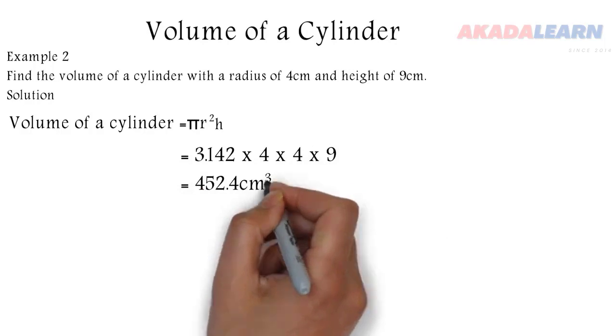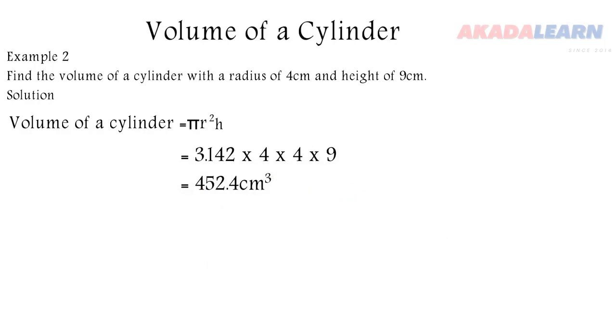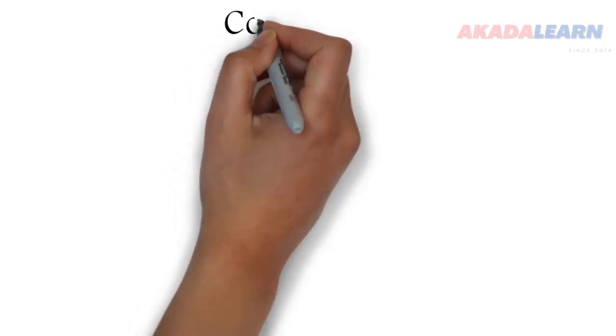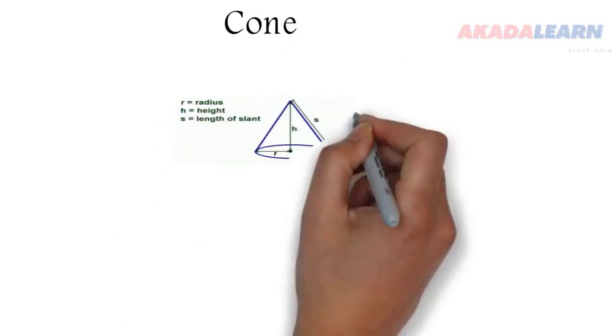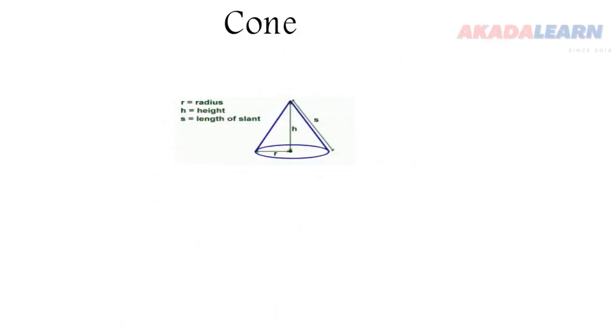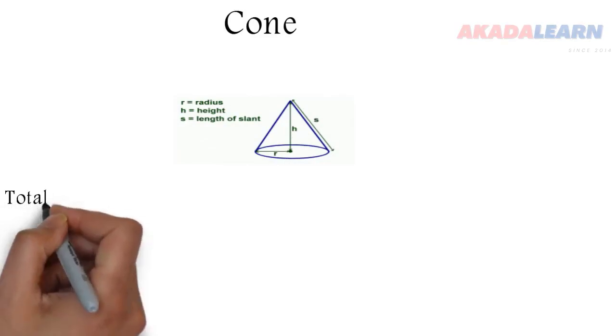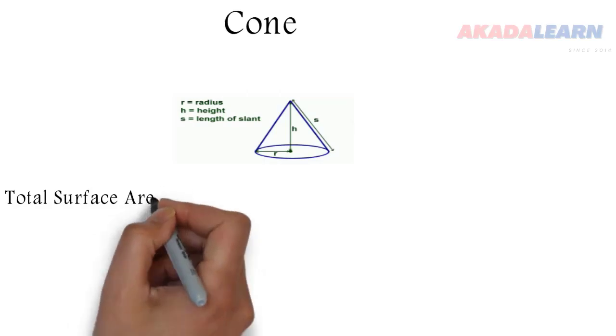For volume, now let's see a cone. We have a cone right there. h is the height, s is called the slant height, while r is the radius of the circular end.